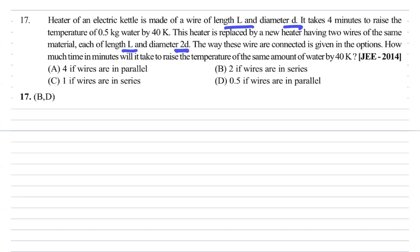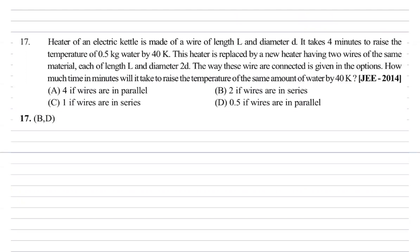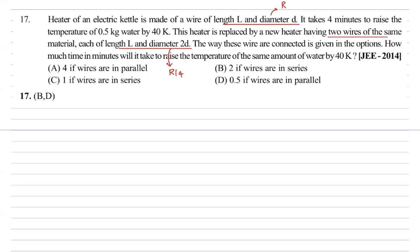This wire has resistance. If we have two wires, their resistance is R by 4 each. But this is two wires, right? Now, time taken by water to rise in temperature by 40 Kelvin.